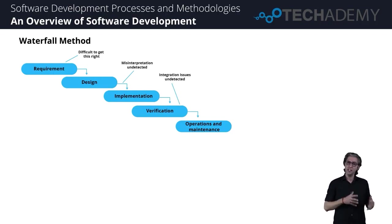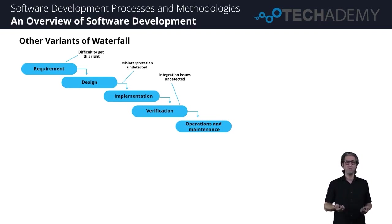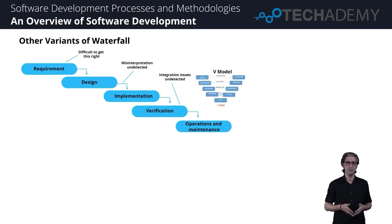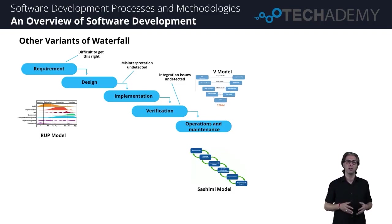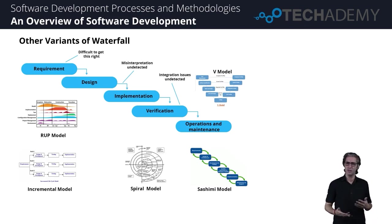Similarly, the integration issues between various components go undetected for a year while the software is actually developing. As these issues came up, other waterfall variants began to evolve, like a V model that focuses heavily on testing, or the sashimi model, or RUP model, which focuses mainly on overlapping different phases. Next up is the incremental model, in which we do the requirements in one shot, but then do the design, testing, and deployment in increments, followed by the spiral model, which is a risk-driven approach.